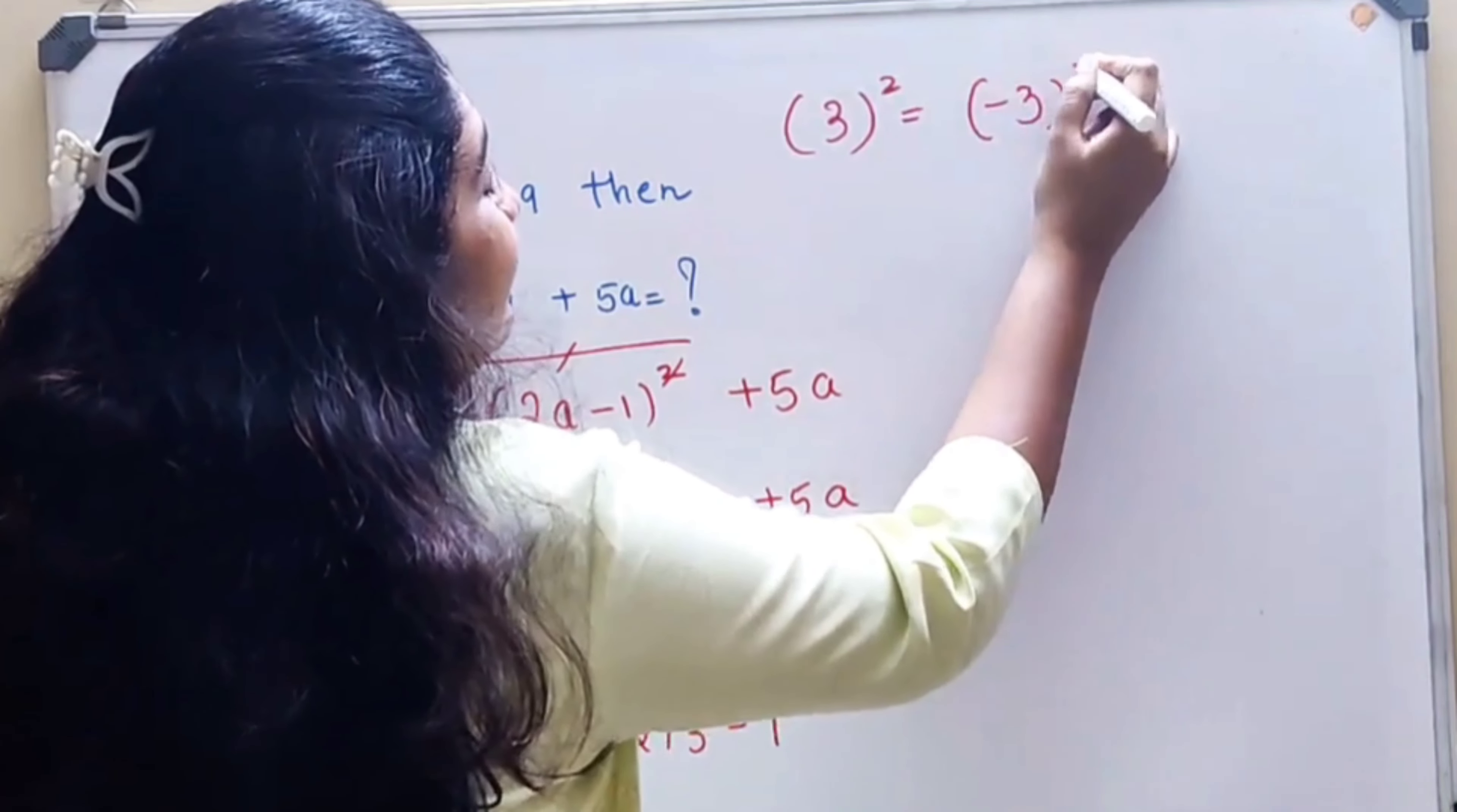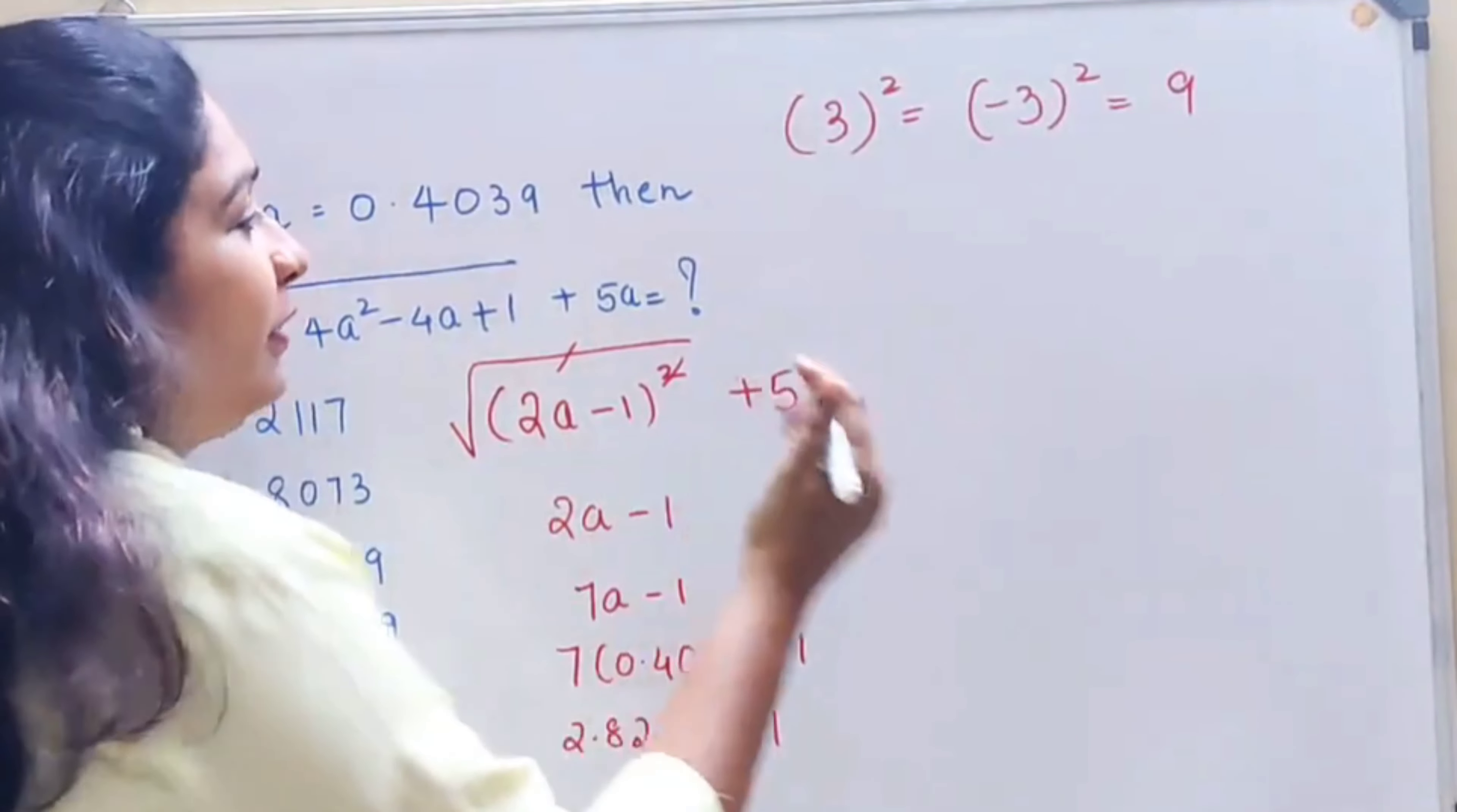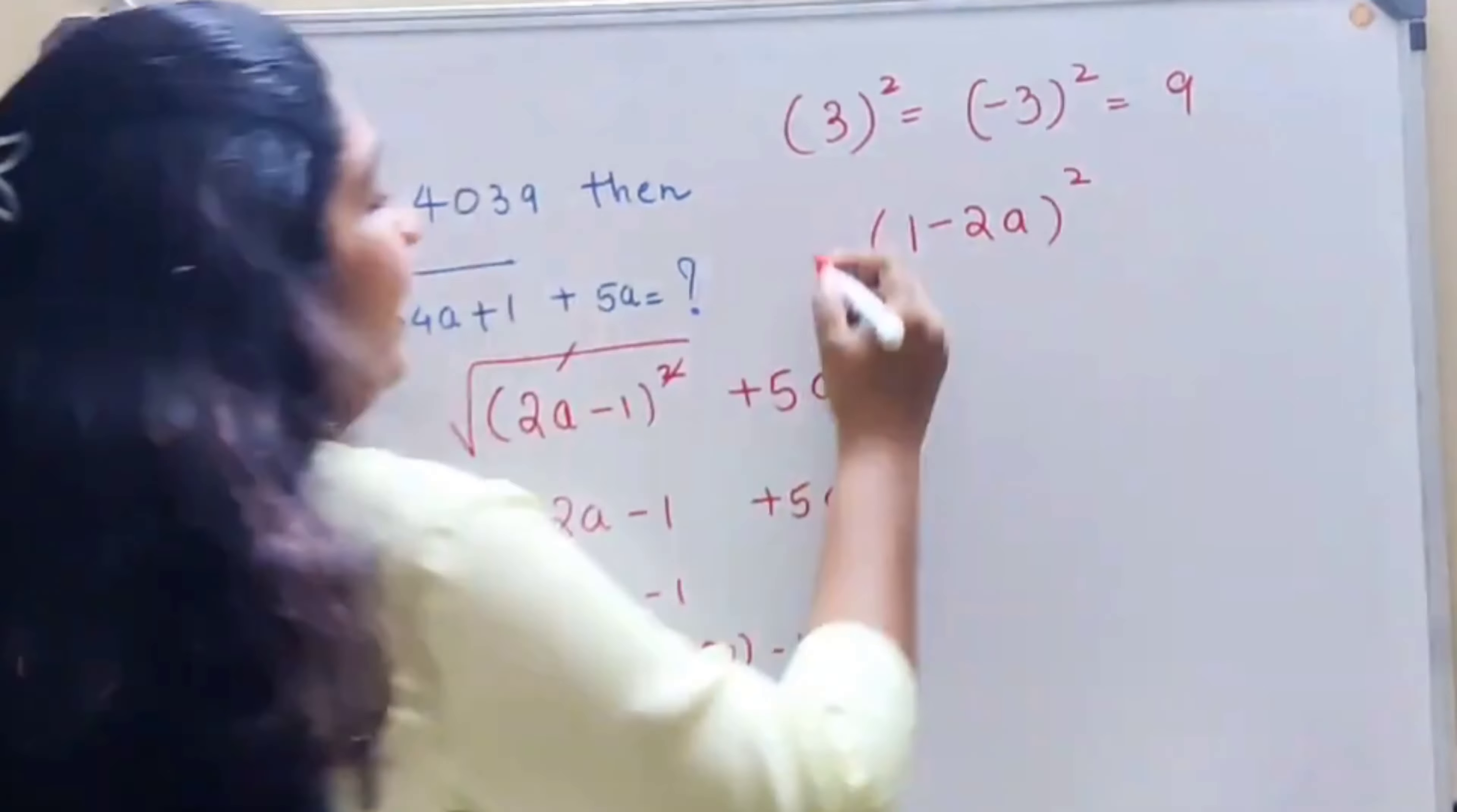All you have to remember was that see, 3² is equal to (-3)² equals 9. So now instead of (2a - 1), what about I write this as nothing but (1 - 2a)².